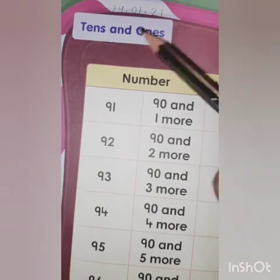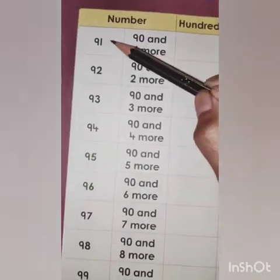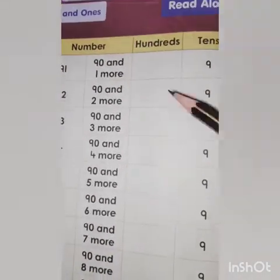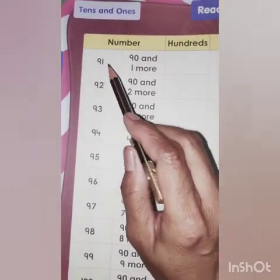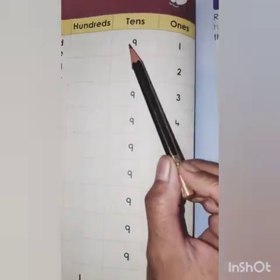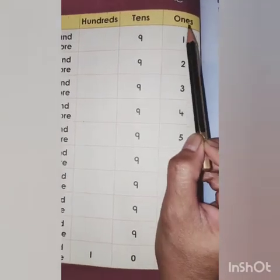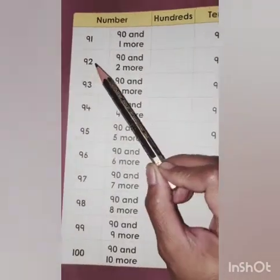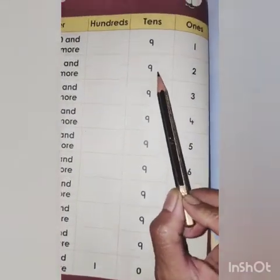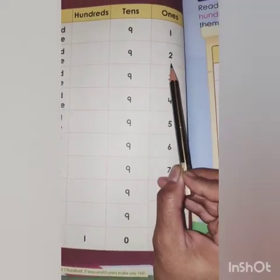Tens and ones. O-N-E-S, ones. Here we have numbers 91 to 100. Now 91 means 90 and one more — 9 comes under tens and 1 comes under ones. 92 means 90 and 2 more — 9 tens means 92, so 2 comes under ones.